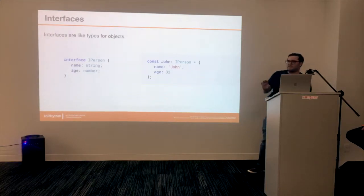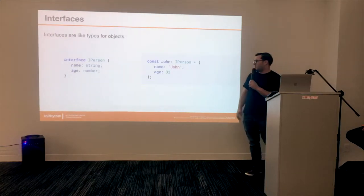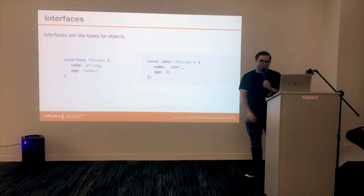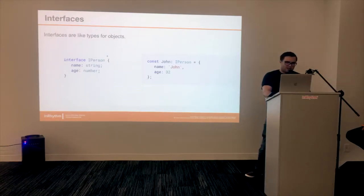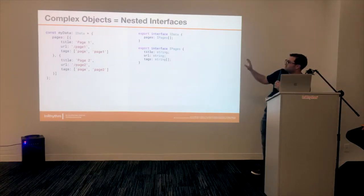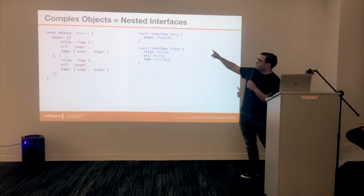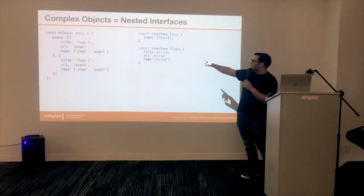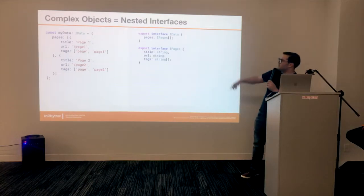Those are the basic types, but if you want to type something like an object, you can use an interface. Here we have a person with a name and an age — an interface is really just an object of types, and you implement it like a normal type on objects. For more complex objects, you can nest types. Here the main type is iData, which has a pages property typed as an array of the iPages interface, which contains title, URL, and tags.